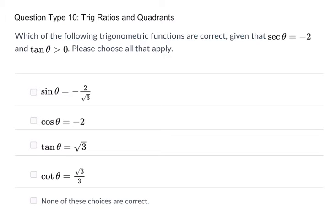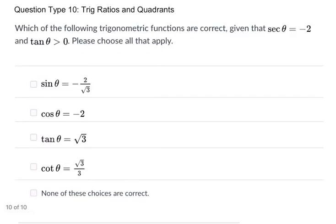Okay, it says which of the following trig functions are correct, given the secant of theta is negative 2 and the tangent of theta is greater than 0? Please choose all that apply.